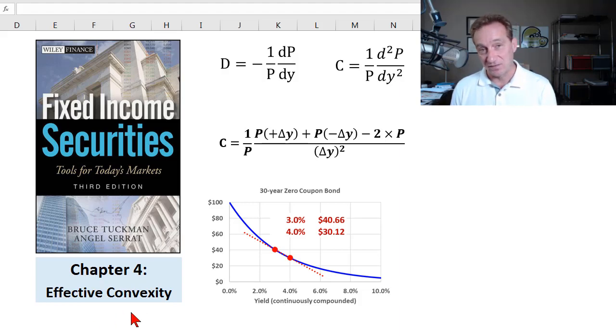Hello, in this video I'll show you how we compute effective convexity for a bond, and I'll do that by illustrating with Bruce Tuckman's Table 4.3, or my rebuild of his Table 4.3, and we'll see that effective convexity is a natural analog to effective duration.